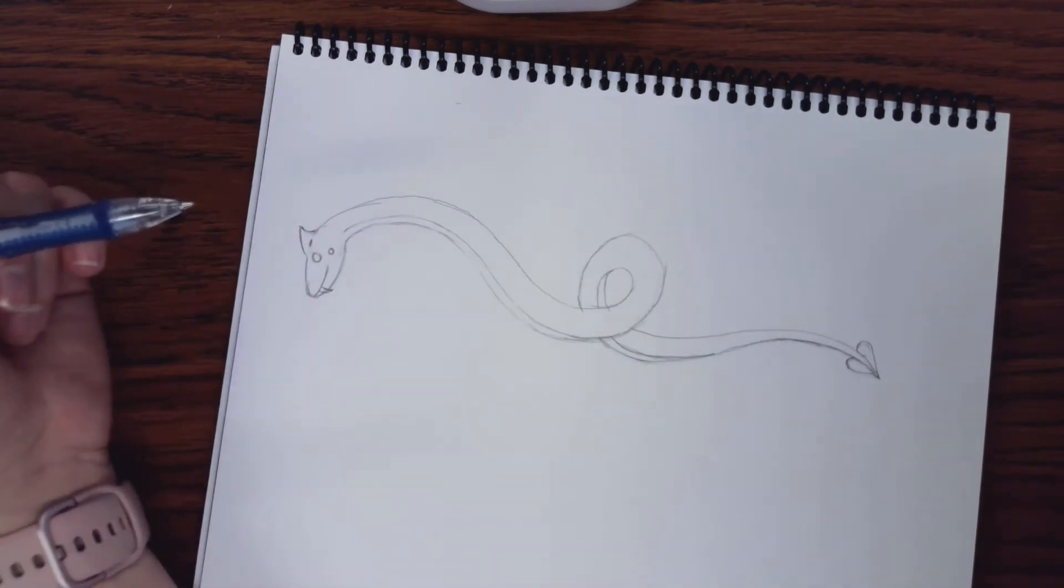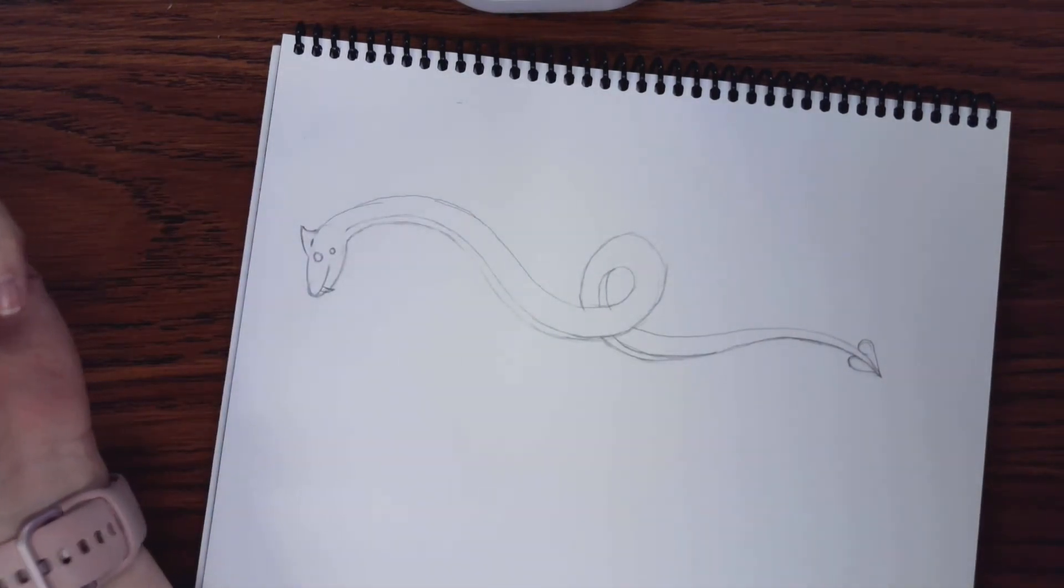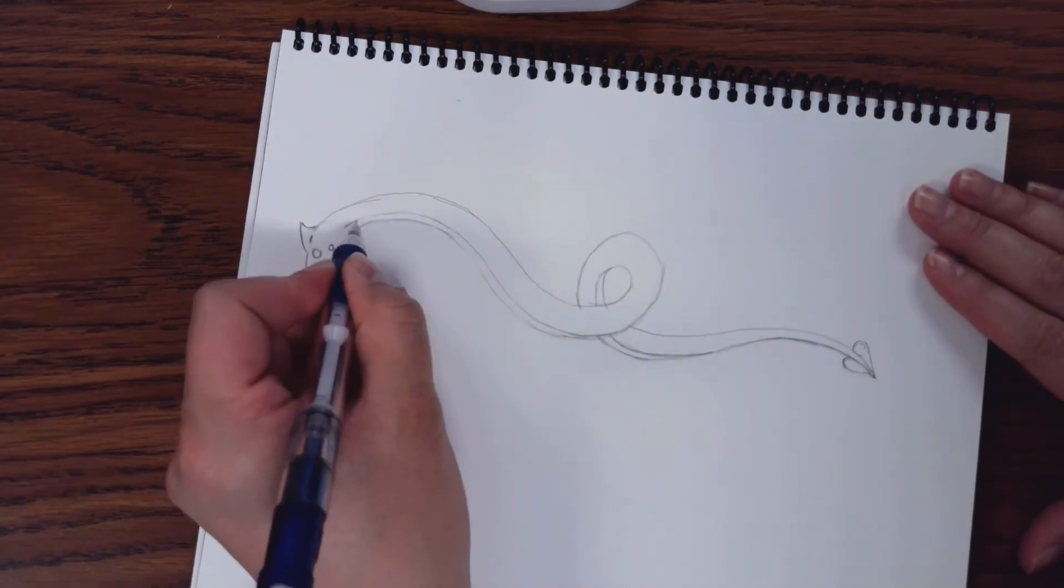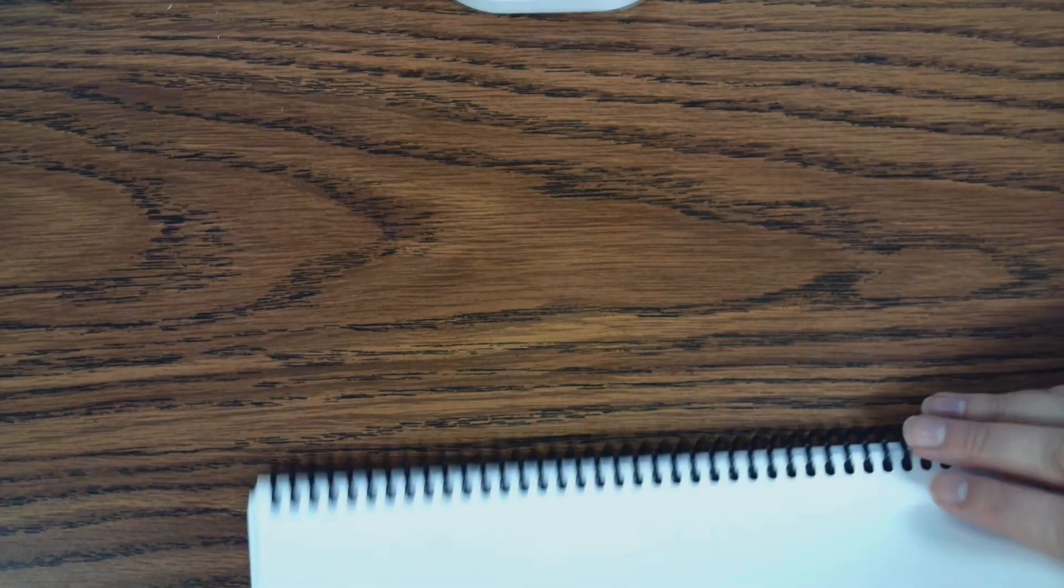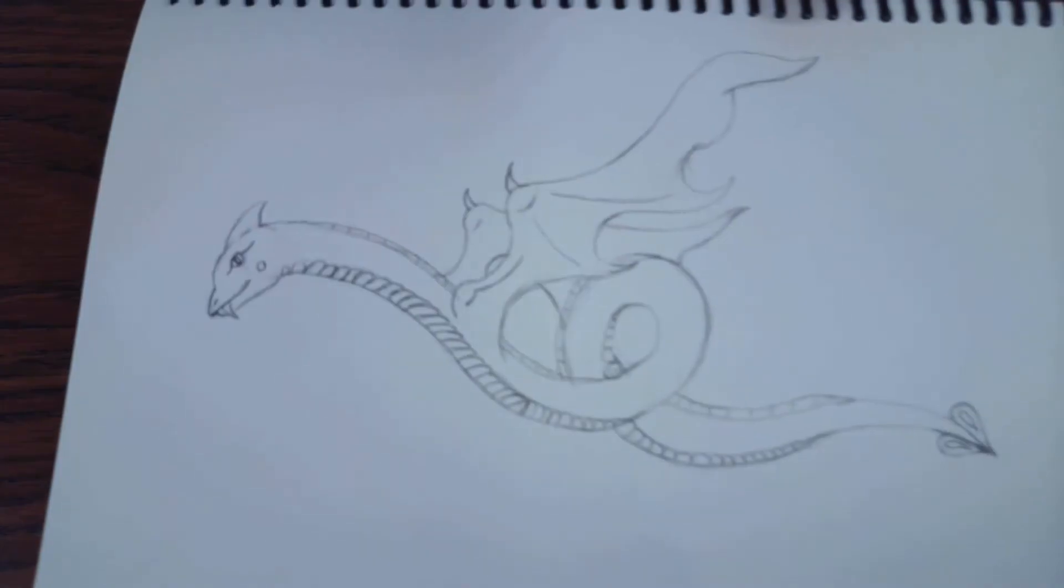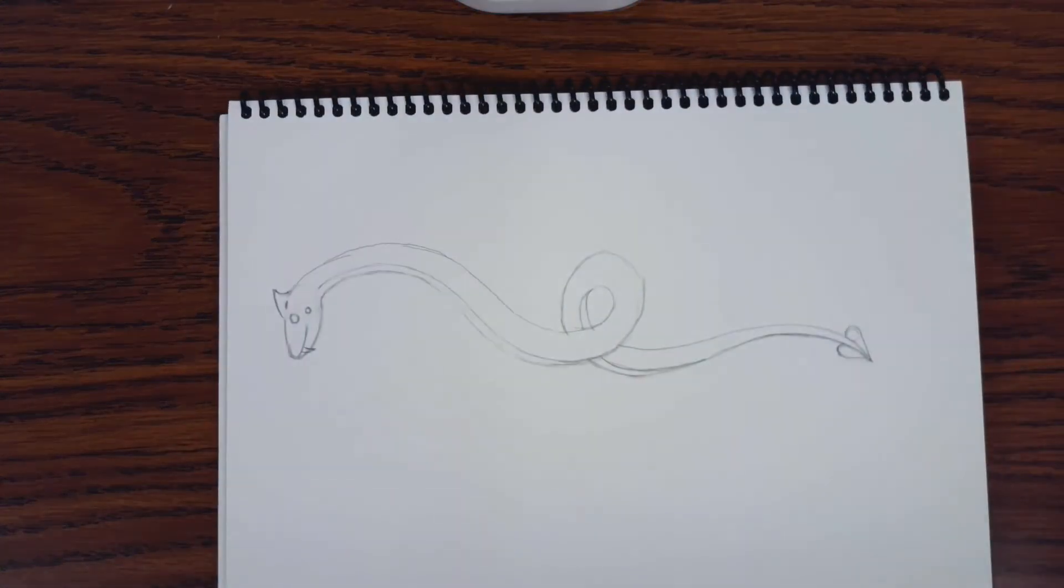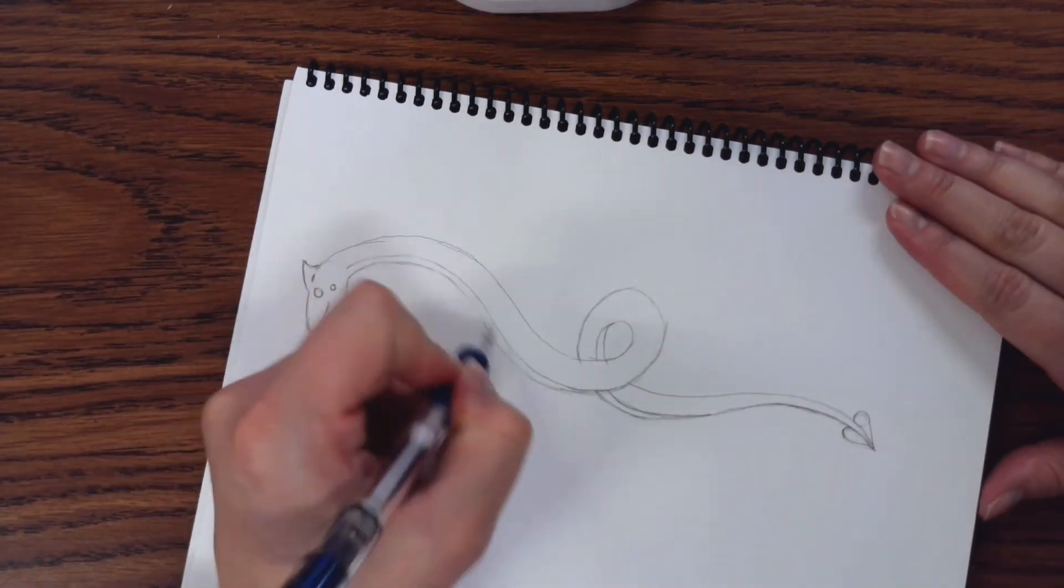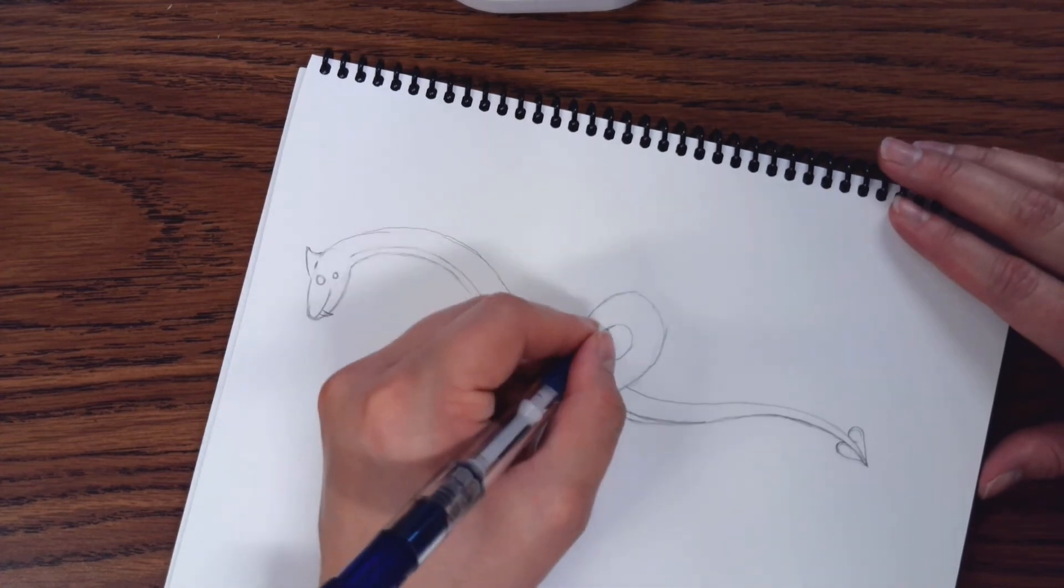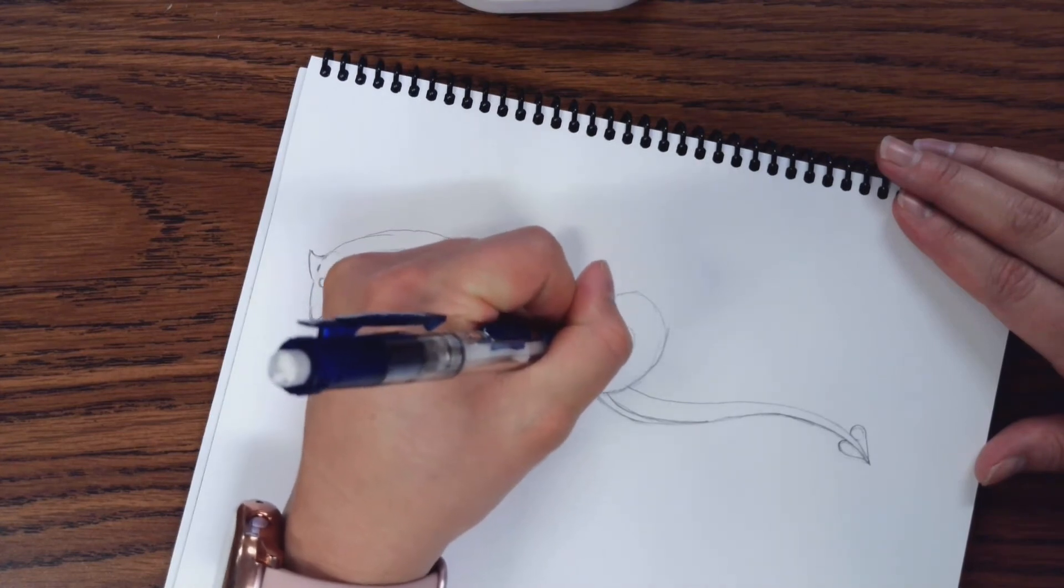From here, you have two options. You can go simple and just do straight lines down. Or you can do what I'm going to do and create little bumps along the way. The reason why I choose bumps is because it looks more realistic. I'm going to go ahead and start with my little bumps. I'm going to erase it just a hair so I can come in and do the little bumps.